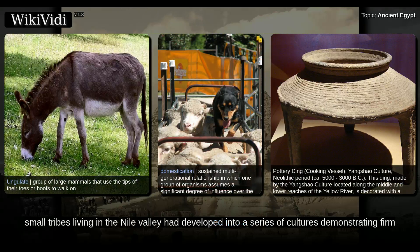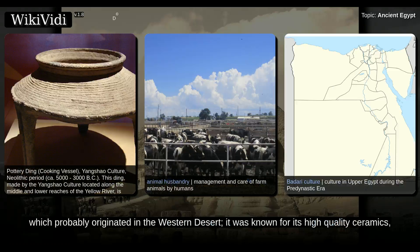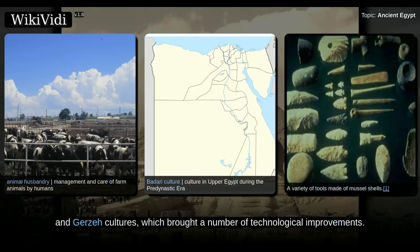By about 5500 BC, small tribes living in the Nile Valley had developed into a series of cultures demonstrating firm control of agriculture and animal husbandry, and identifiable by their pottery and personal items, such as combs, bracelets, and beads. The largest of these early cultures in Upper Egypt was the Badarian, which probably originated in the Western Desert. It was known for its high-quality ceramics, stone tools, and its use of copper.